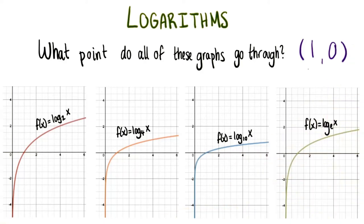They all go through the point as we can see right here. Each of them has the same x-intercept.